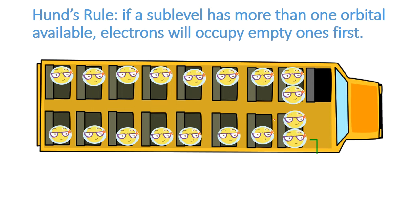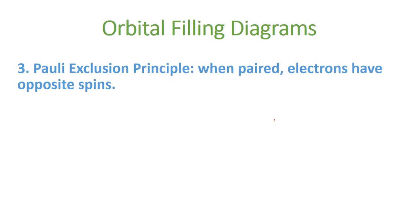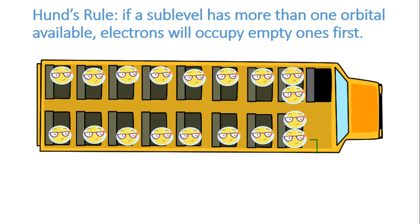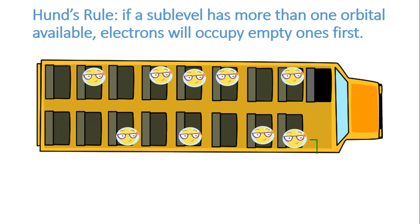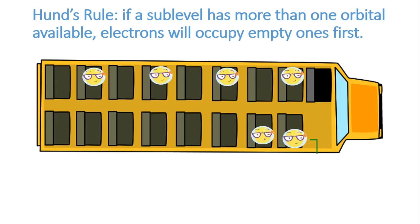Hund's rule says that if a sublevel has more than one orbital available, the electrons won't double up. For carbon, which has 2P2, rather than doubling up in the first orbital, the second electron goes over to the next orbital. So that's like kids on a bus. That's Hund's rule.